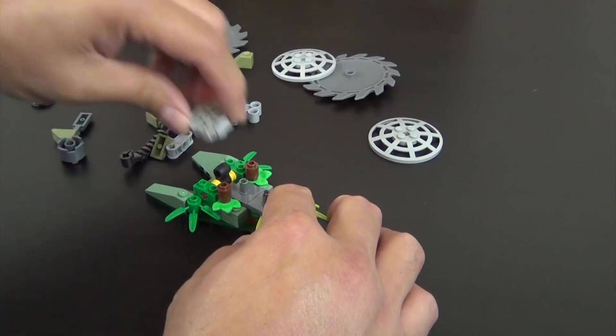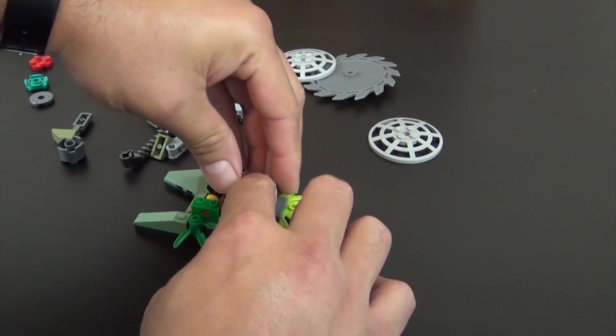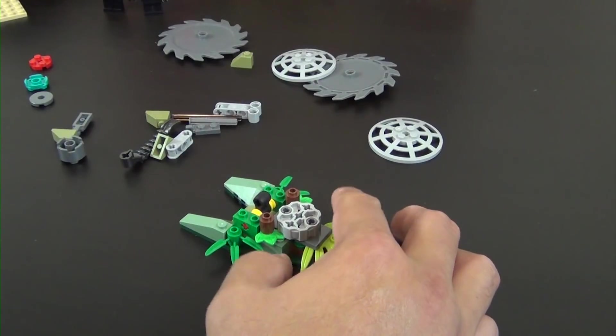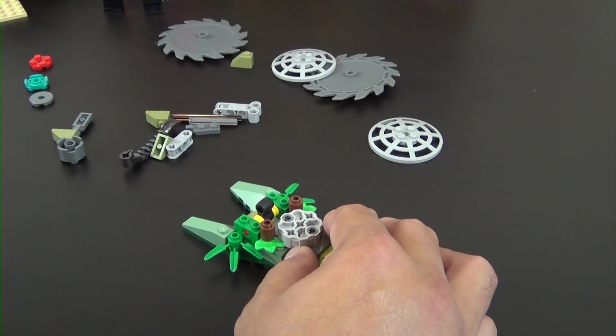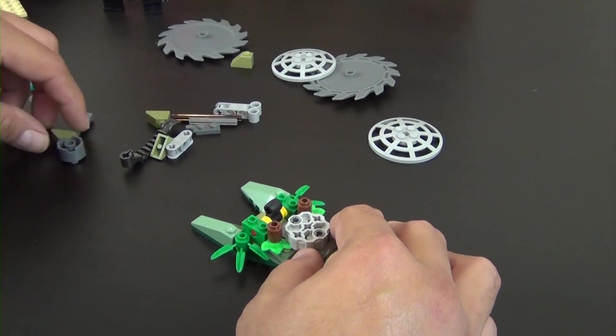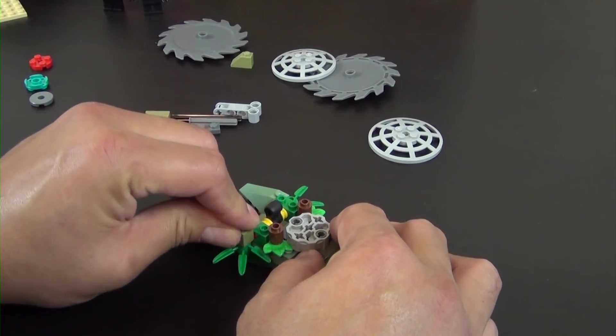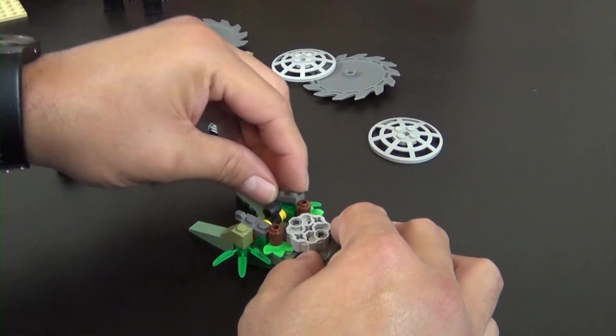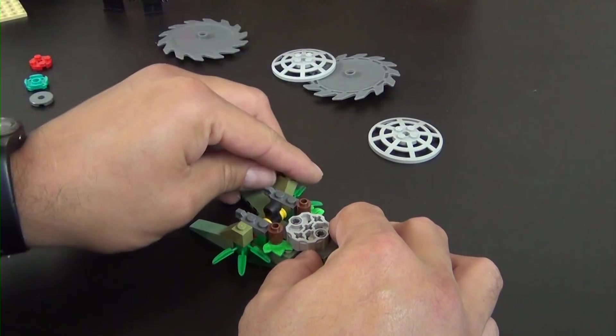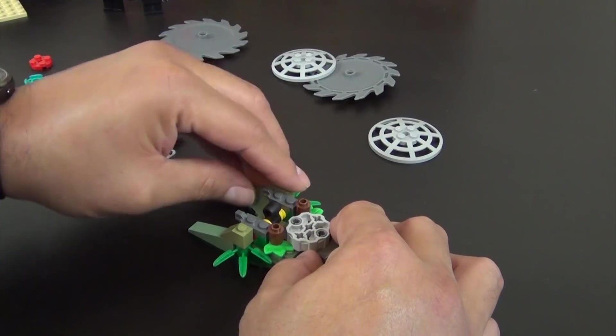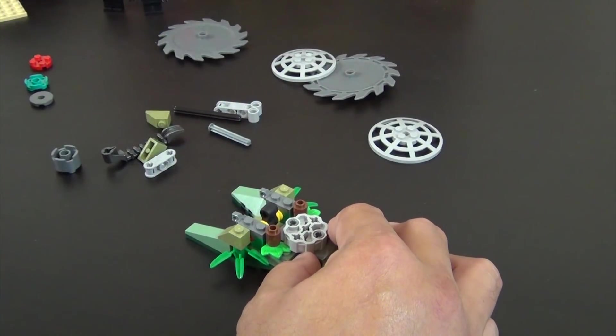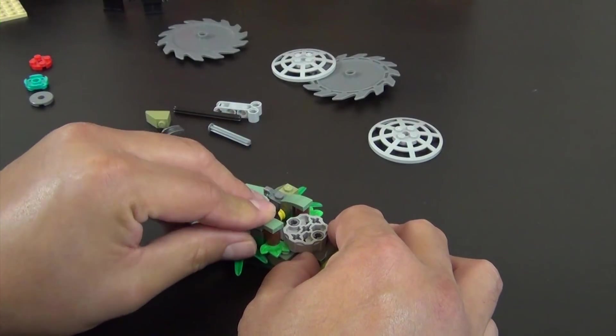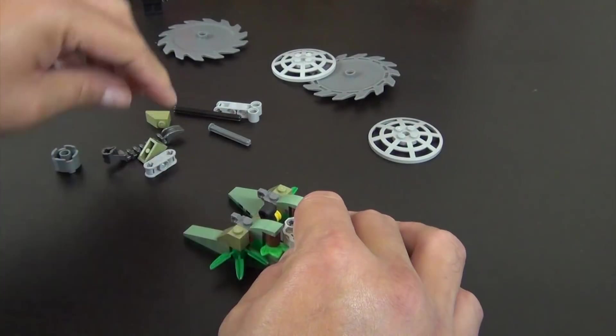Add this piece here, and this piece goes there. Some sand green baby bow slopes.